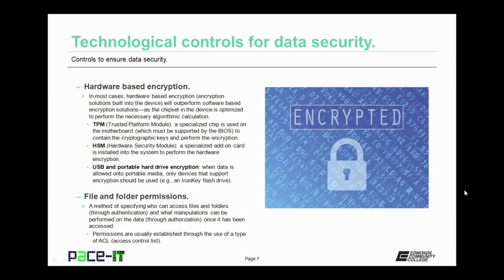TPM is very useful for performing full disk encryption on laptops. Then there's HSM, that's hardware security module — a specialized add-on card is installed into the system to perform the hardware encryption. If TPM is not possible, HSM is another option that can be utilized to perform hardware-based encryption. And finally, there's USB and portable hard drive encryption. When data is allowed onto portable media, only devices that support encryption should be used. A solution for USB flash drives is to use an IronKey USB flash drive — they are encrypted by default.